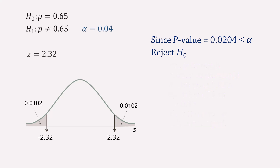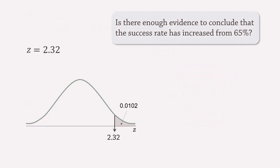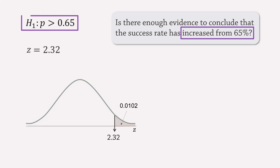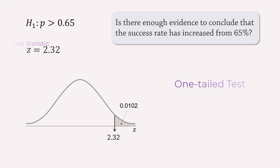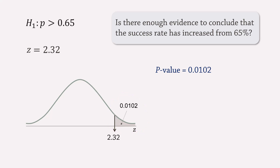Now, suppose instead we want to test if the success rate has increased from 65%. Then the alternative hypothesis becomes p greater than 0.65 — greater because of the keyword 'increased.' The test statistic will not change, but we now have a one-tailed test, in particular a right or upper tail test. Thus, the p-value will be the area to the right of the test statistic, which is 0.0102.